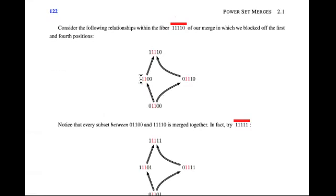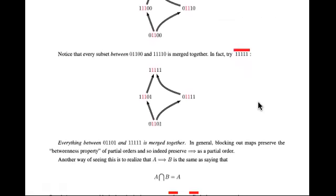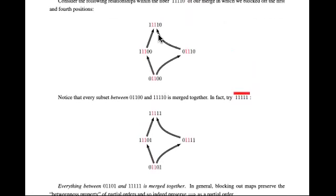In fact, we could put arrows between them in a subset diagram like this, where when we have the most ones, we're up here. When we have the least ones, we're down here. And then everything else kind of follows between. And we can put kind of the subset type idea happening right here. Now notice that every subset between 01100 down here and 11110 is merged together.